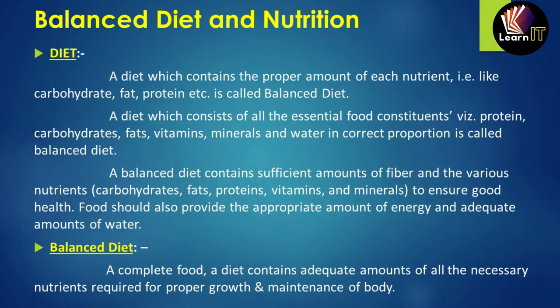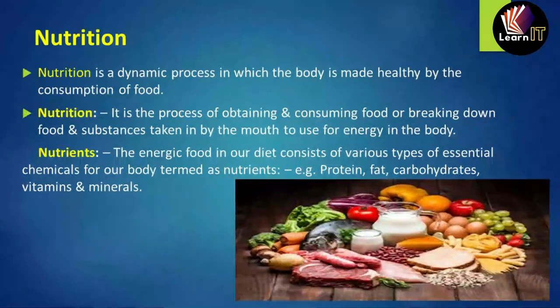A balanced diet contains a sufficient amount of fibers and various nutrients such as carbohydrates, fats, proteins, vitamins, and minerals to ensure good health. Food should also provide the appropriate amount of energy and adequate amount of water so that the body can work well. In basic terms, a balanced diet means a complete food — a diet which contains all adequate amounts of necessary nutrients required for the growth and maintenance of the body.